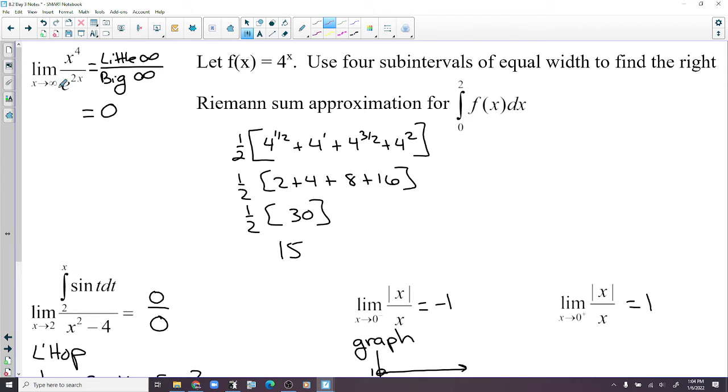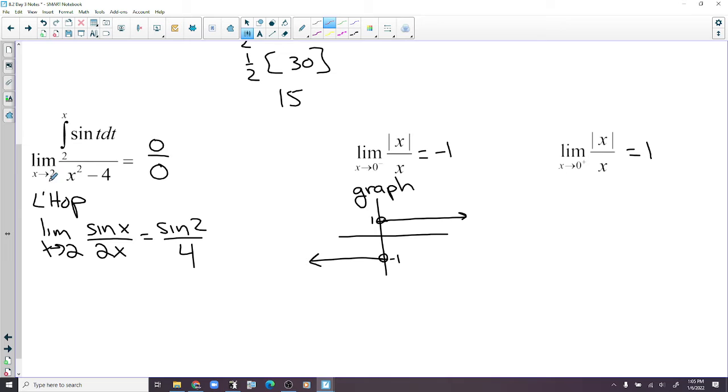Here we have a little infinity over a much bigger infinity, so we get 0. Use four subintervals of equal width to find the right Riemann sum approximation. So we don't start with 4 to the 0, we start with 4 to the 1 half because we're using right Riemann sum and not left Riemann sum. So the answer ends up 15. The integral from 2 to 2 is 0, 4 minus 4 is 0. The derivative is sine of x and the derivative of the bottom is 2x. And then when we plug 2 in, we get sine of 2 over 4.